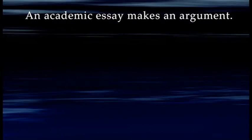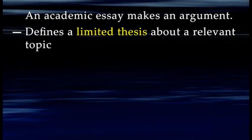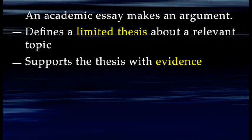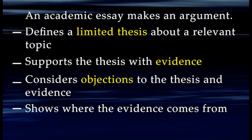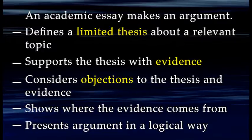So what do I mean by academic writing? I'm talking primarily about the kinds of essays you write in graduate school or to publish in a scholarly setting. An academic essay makes an argument. It defines a limited thesis about a relevant topic, supports that thesis with evidence, and considers objections to the thesis and to the evidence. The evidence includes the author's own analysis and knowledge but is also based on extensive research using credible, relevant sources. The essay presents the argument and evidence in an orderly way — with an introduction, a thesis near the beginning, a body that discusses each aspect of the argument, a conclusion, and citations that show where the evidence came from.